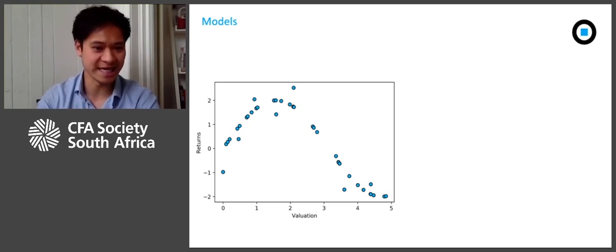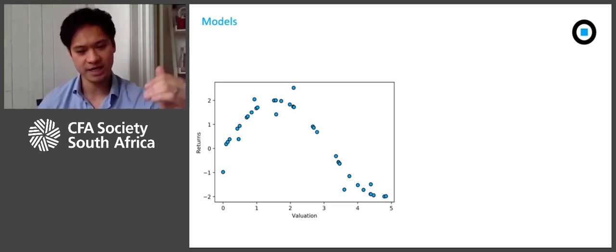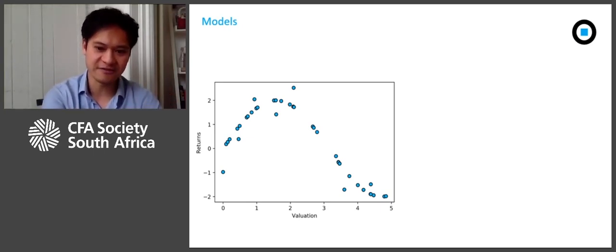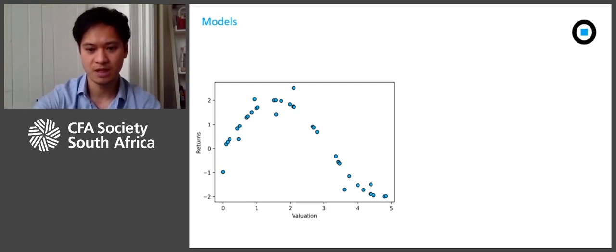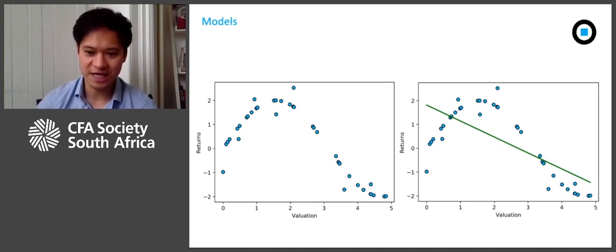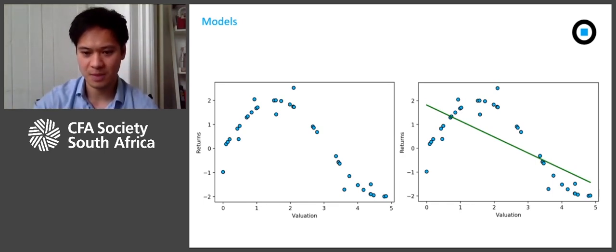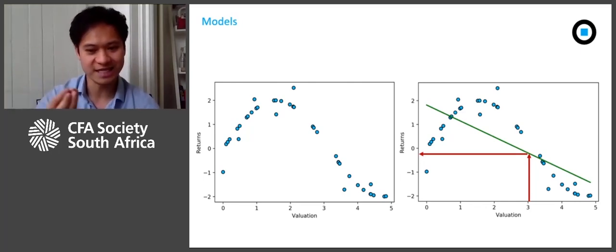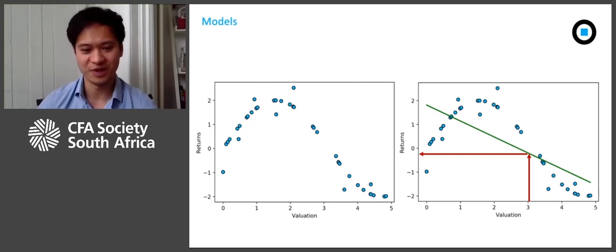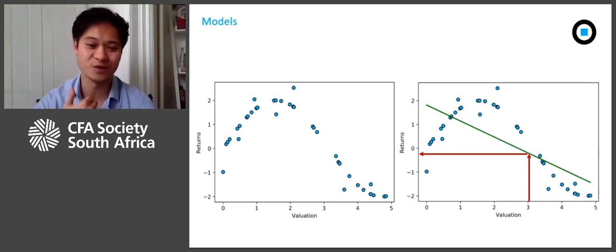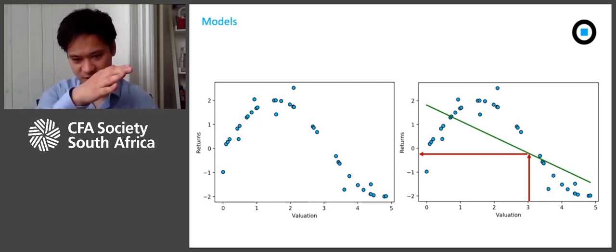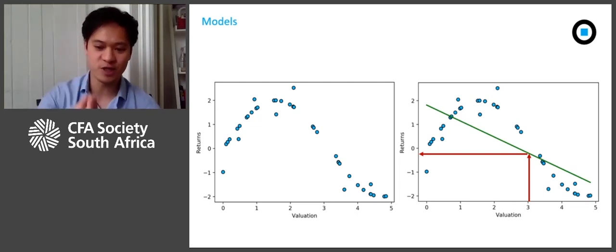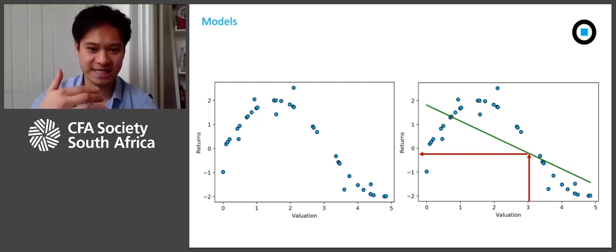On the left we've got some valuation and returns data on different stocks — returns on the y-axis from high to low, and valuation from cheapest on the left to most expensive on the right. The traditional statistical approach for finding this relationship would be to draw a line of best fit through the data. This is ordinary least squares, or linear regression. This simple model enables you to infer what the return on any stock would be given its valuation. In this example, a stock with a valuation of three would be inferred to have a return slightly less than zero.